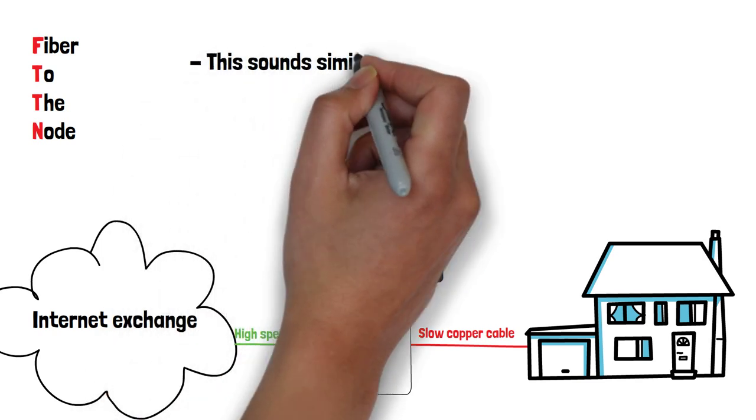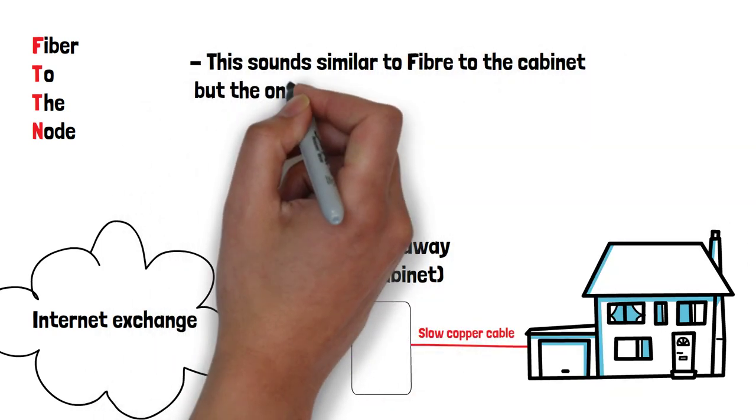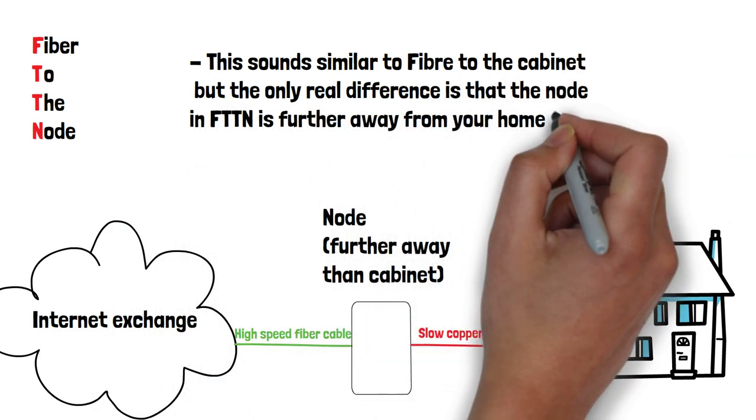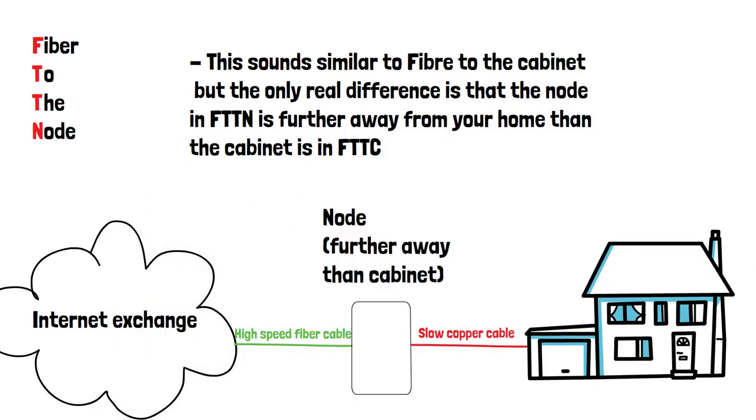This sounds very similar to fiber to the cabinet, but the only real difference is that the node in FTTN is further away from your home than the cabinet is in FTTC. This makes FTTN slower than FTTC, as the signal has to travel further using the copper cable.